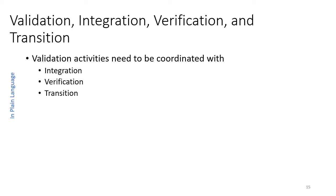With regards to the System Engineering Handbook technical processes, the validation activities should be coordinated along with the integration, verification, and transition activities — the integration of systems and subsystems for verification testing and then the transition. You'd want to make sure that the validation testing, both the tests and the timeline, are coordinated with the integration, verification, and transition.